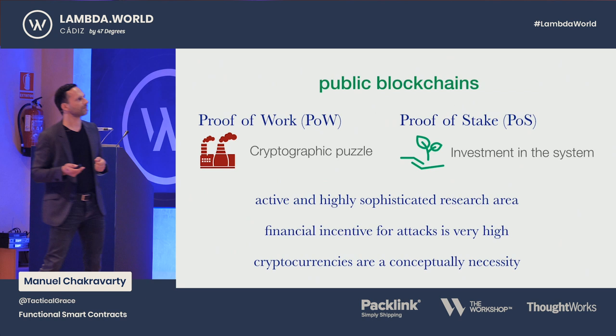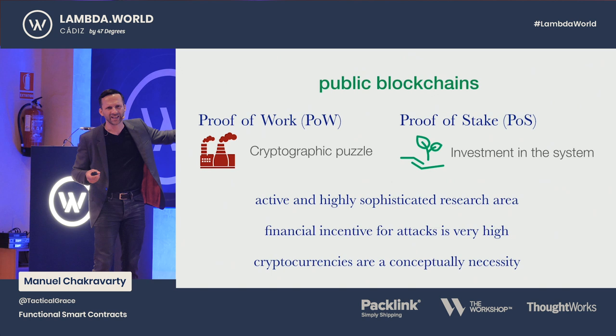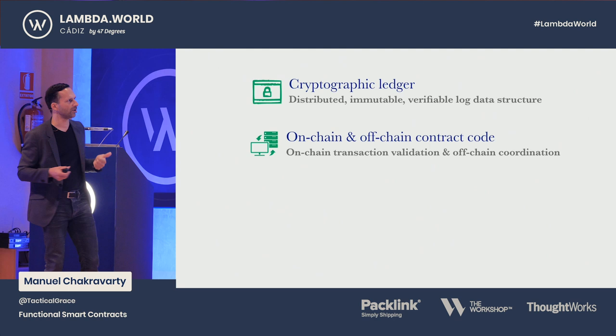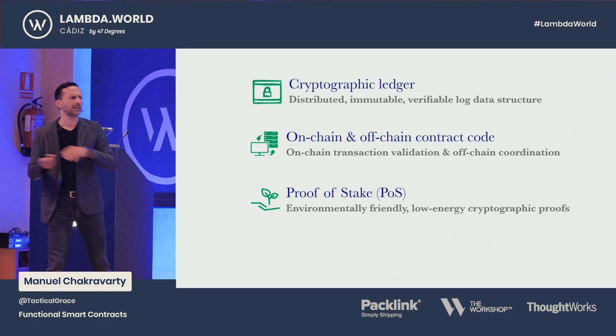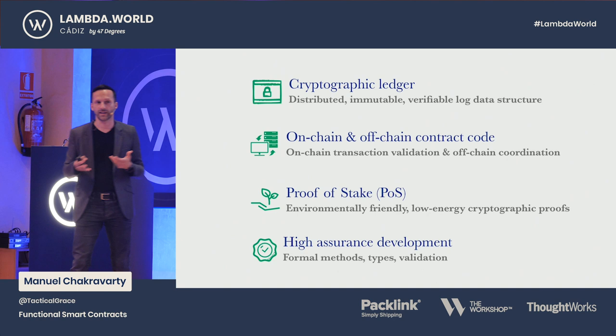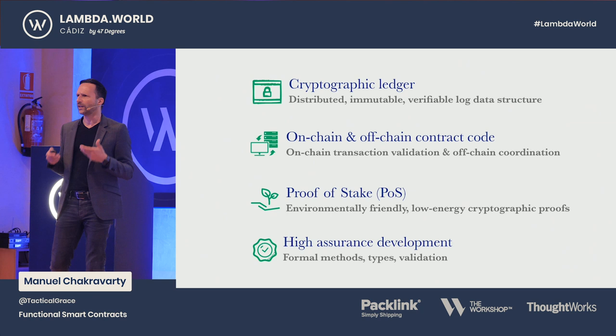So I don't want to spend too much time on consensus algorithms, but what's really super important is this stuff has to work correctly, otherwise it'll be hacked. So what have we seen so far? We want these immutable, verifiable log data structures. We need a programming language for on-chain validation and off-chain additional code. We really want this proof-of-stake system because of energy. And we really need to get it right because these systems are under attack from sophisticated parties. So we'd better use a proper, foundational, research-based approach to developing these systems.